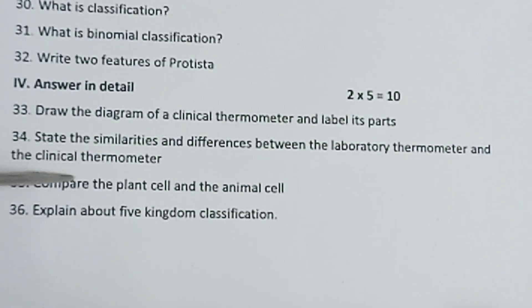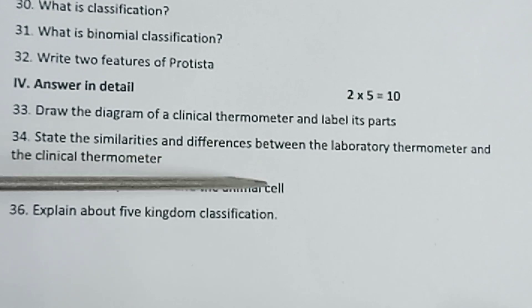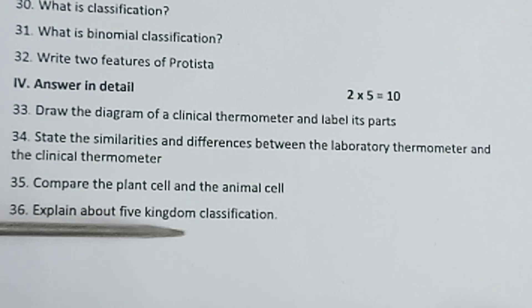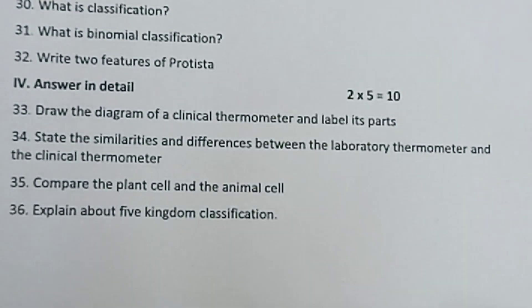Thirty-fifth one: Compare the plant cell and the animal cell. Thirty-sixth one: Explain about five kingdom classification. All the best.